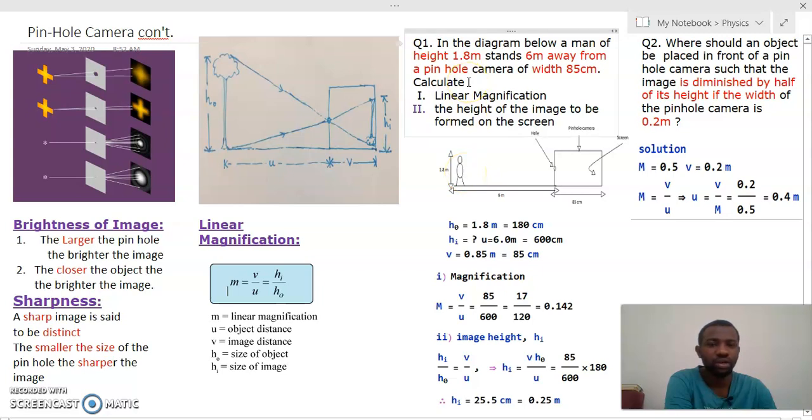We look at an example, a question in particular. Question one says that in the diagram below, a man of height 1.8 meters stands 6 meters away from a pinhole camera of width 85 centimeters. Calculate: i) linear magnification, ii) the height of the image to be formed on the screen.